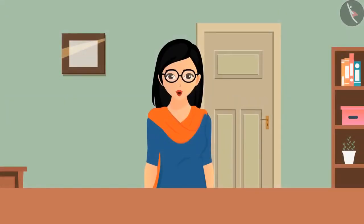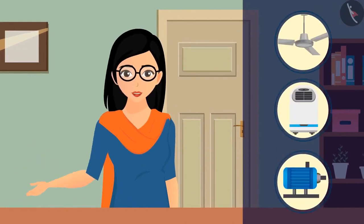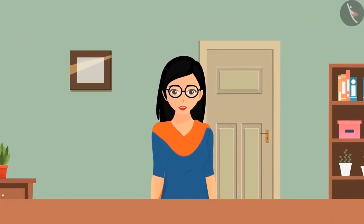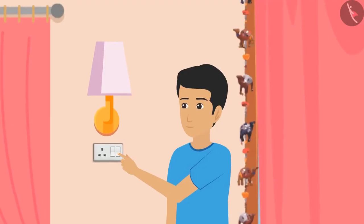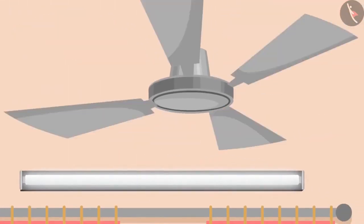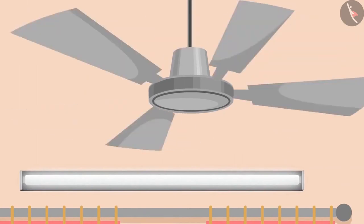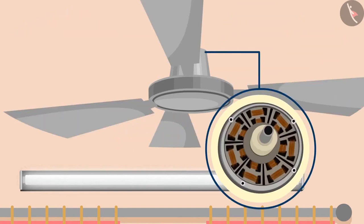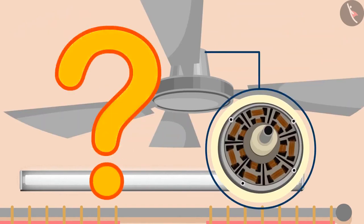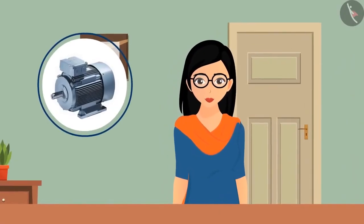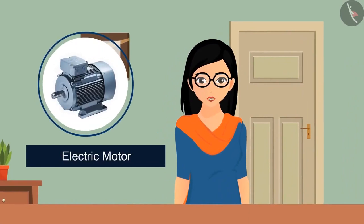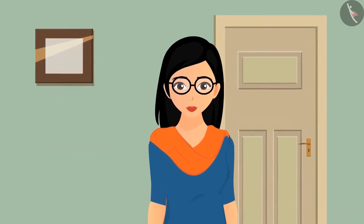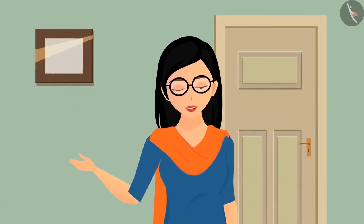You must have seen equipment like fans, air coolers, or water pumps in your homes. We know there is a motor inside the fan which helps it rotate. What exactly is inside this motor? In today's video, we'll learn about the electric motor along with its principle and working. An electric motor does not rotate when electric current flows through it alone — it rotates when a current-carrying conductor is placed in a magnetic field.